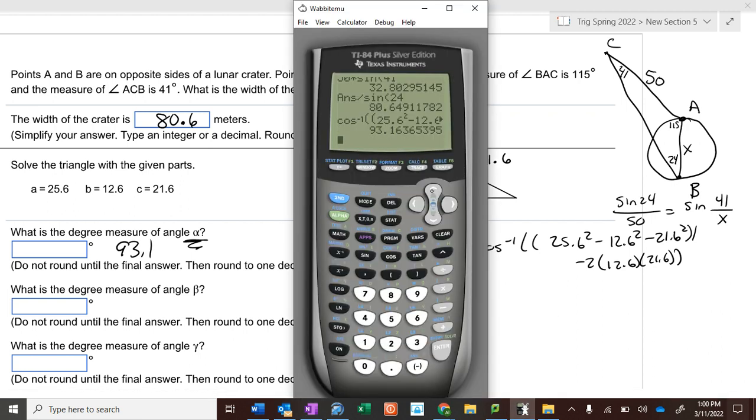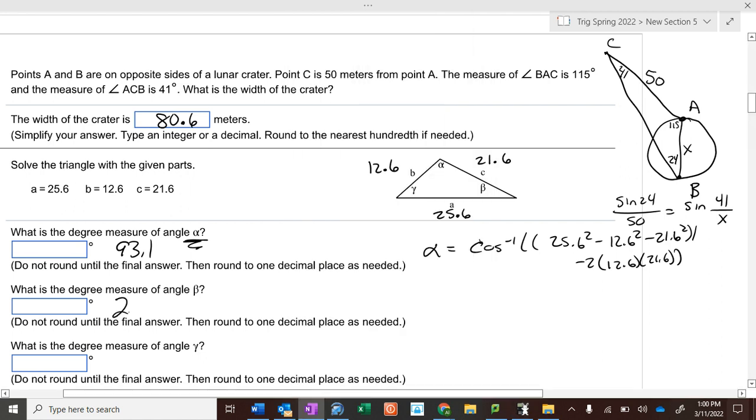And then all I have to do is switch, just take the same one to find beta. Since b is 12.6, I'd switch a and b around. So I put 25.6 where there was a b, and a 12.6 where there was an a, and I get 29.4. And if we add these up, that's 122.5. So if we take 180 minus 122.5, we get 57.5 for this one. Are we good?